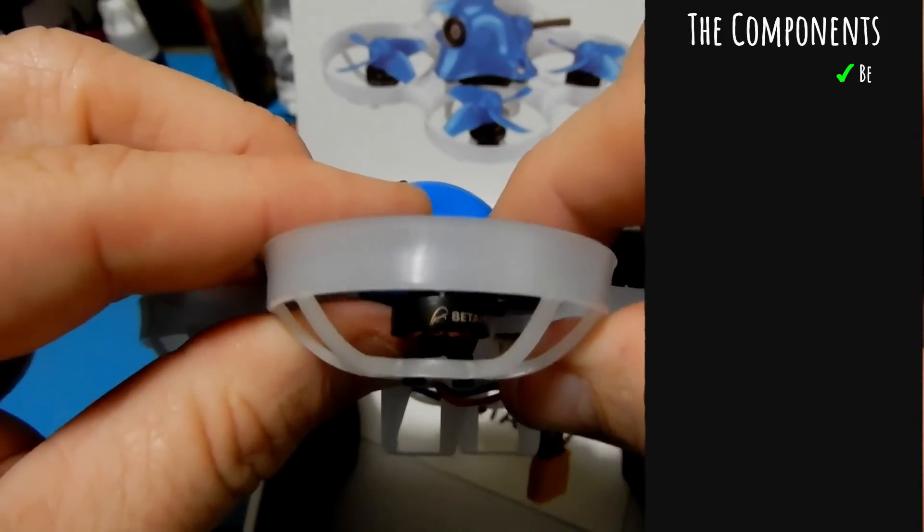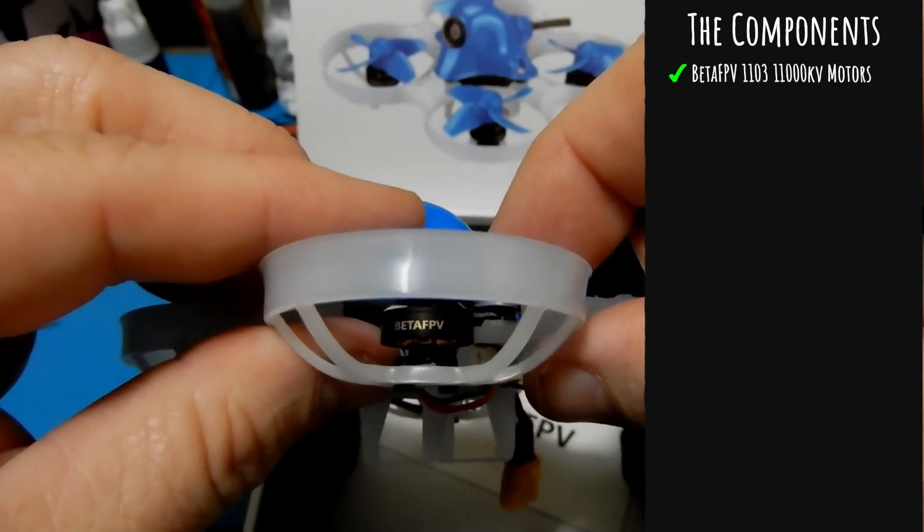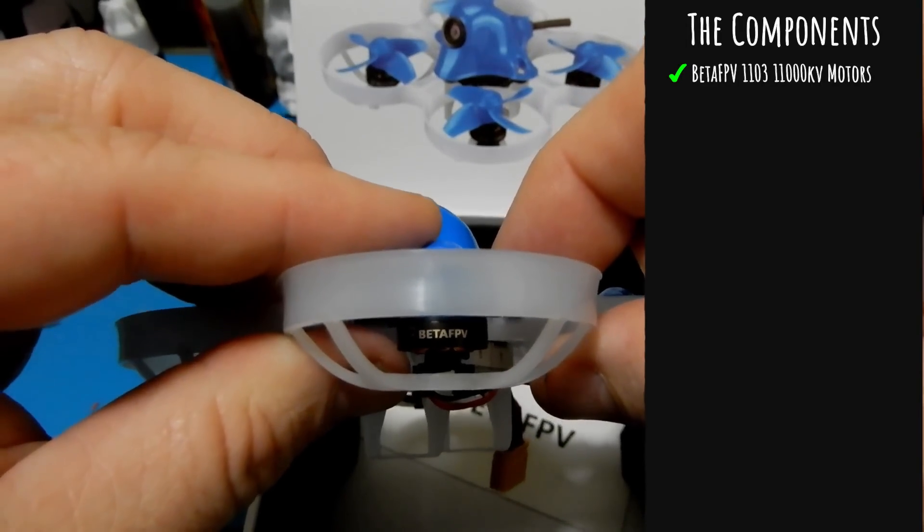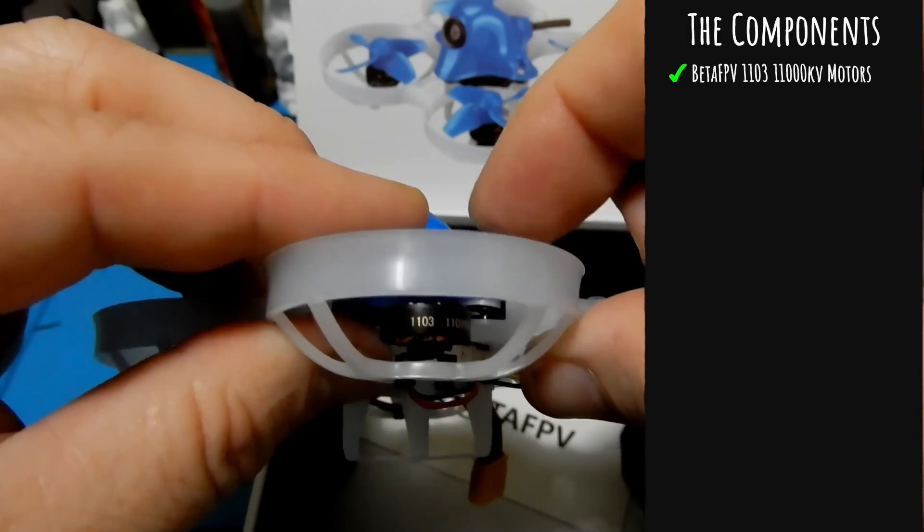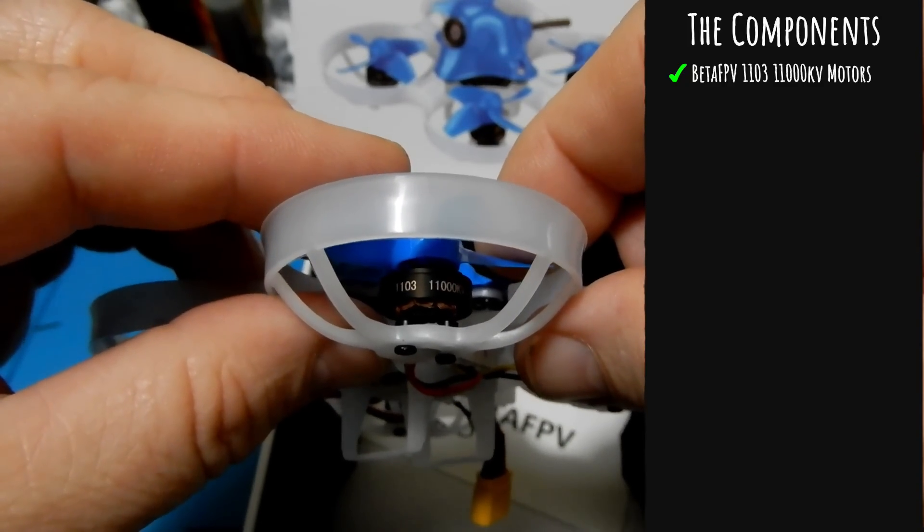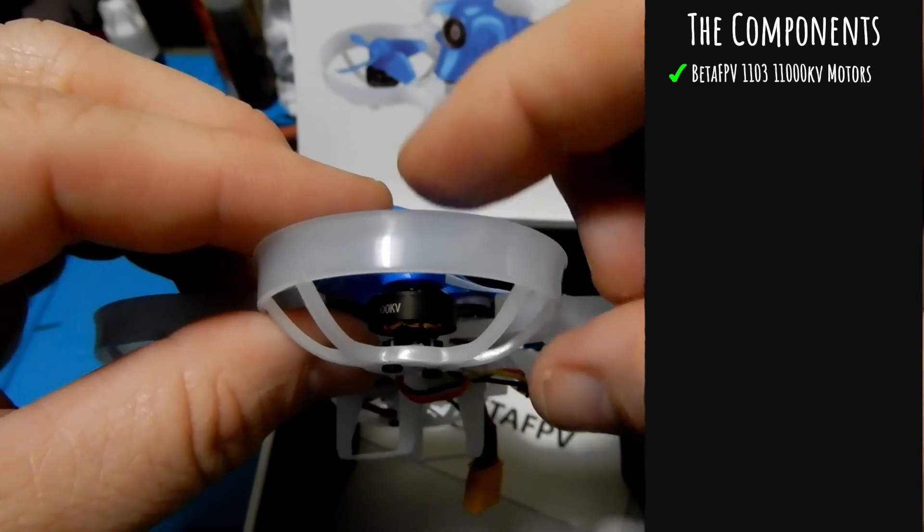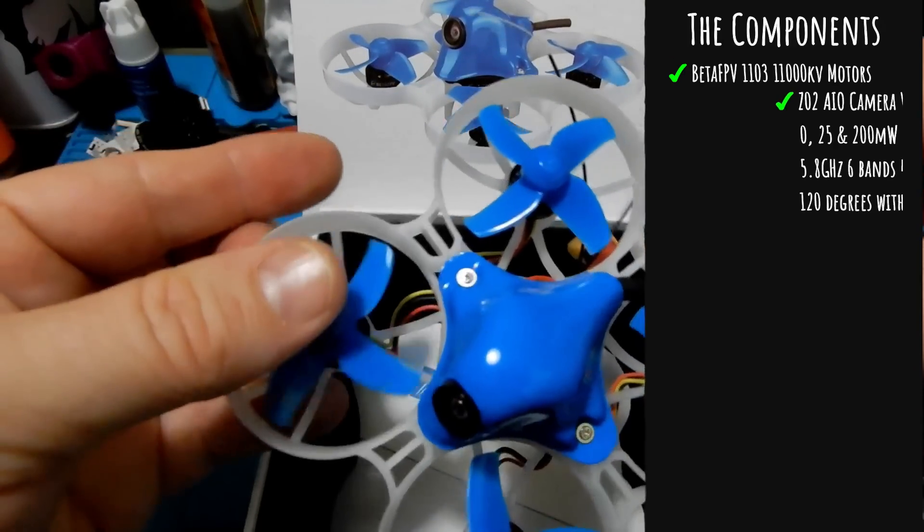Let's break down the components of the Beta FPV 75X. The first thing we have are these Beta FPV 1103 11,000kv brushless motors. These motors are the lightest 1103 motors in the world coming in at only 3.2 grams with a JST connector. Truly the innovation part of this particular little quad because this is a game changer - now we can add power without adding weight.